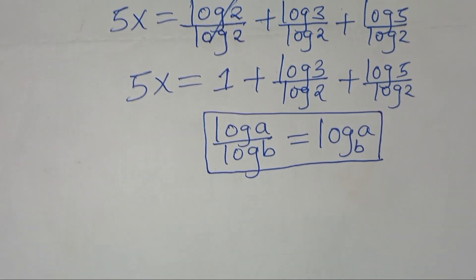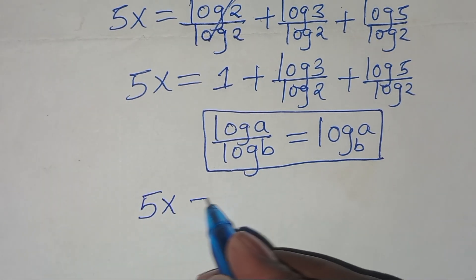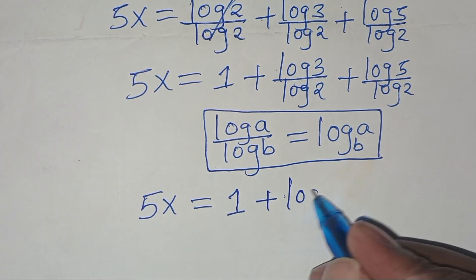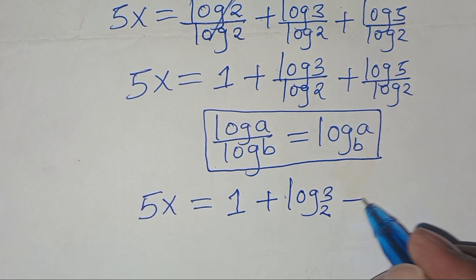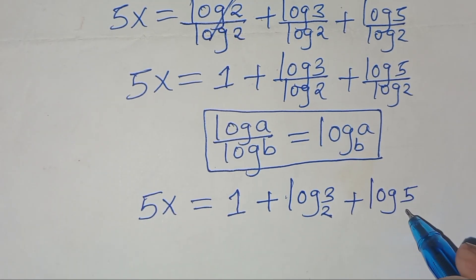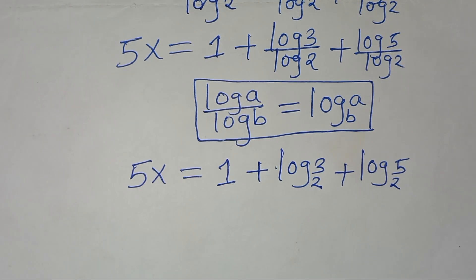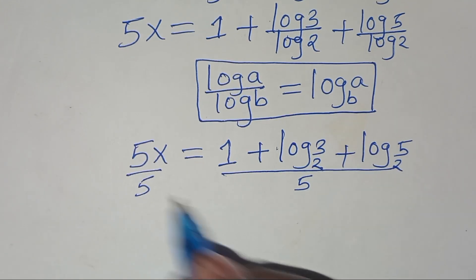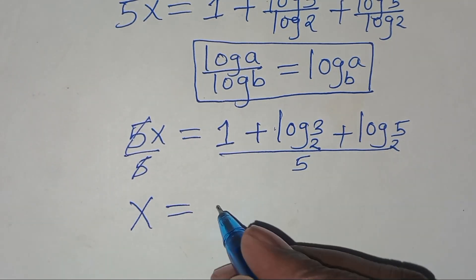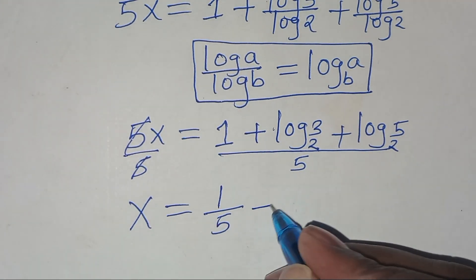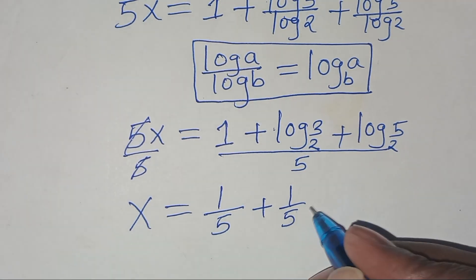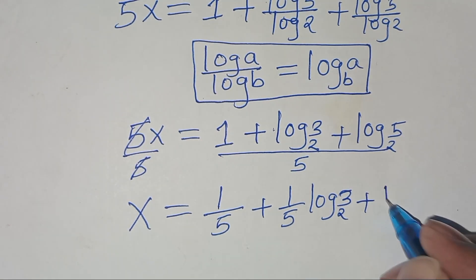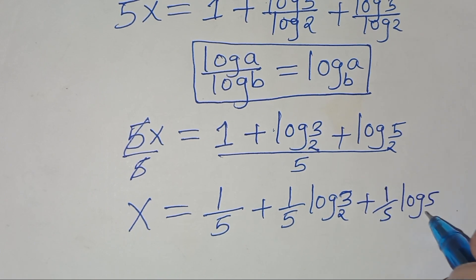Applying the change of base property, we have 5x equals 1 plus log 3 to base 2, plus log 5 to base 2. Dividing both sides by 5, x equals (1 over 5) plus (1 over 5) log 3 to base 2, plus (1 over 5) log 5 to base 2.